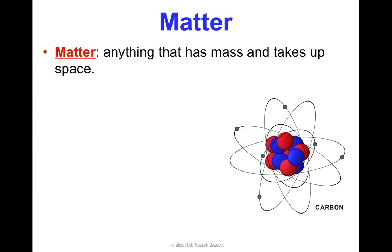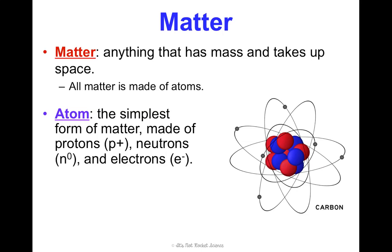Matter is anything that has mass and it takes up space. All matter is made of something called atoms. An atom is considered the simplest form of matter, and it's made of protons, which are positive — the notation we use to abbreviate them is P+.